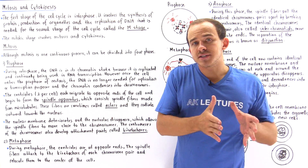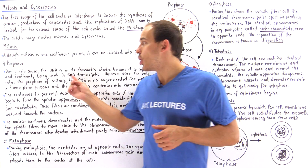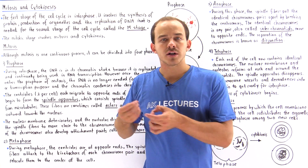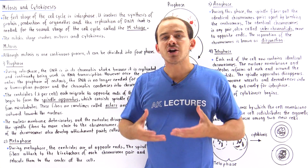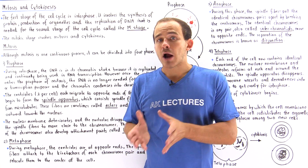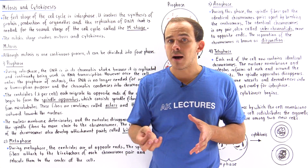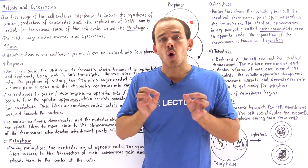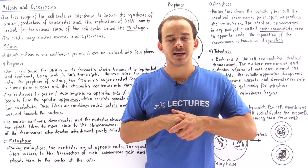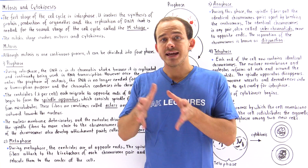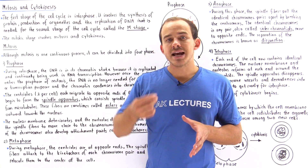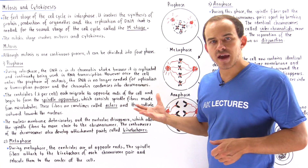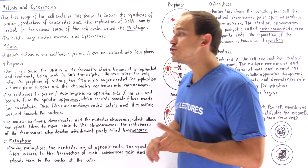In interphase, DNA is continually being transcribed into RNA so that we can form the proteins needed by the cell, meaning our DNA in interphase exists predominantly in the chromatin state. However, in mitosis we no longer need to transcribe or replicate our DNA, so as soon as the cell enters prophase, the DNA condenses from chromatin into chromosomes.